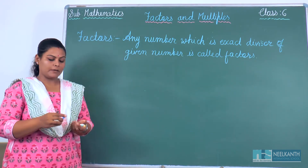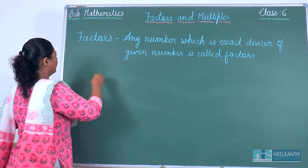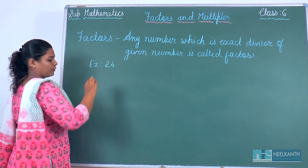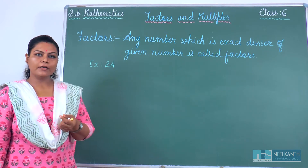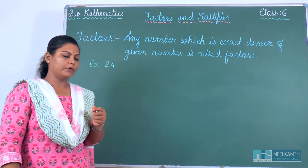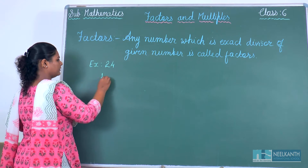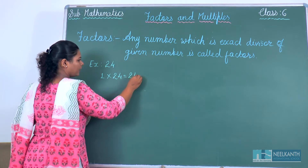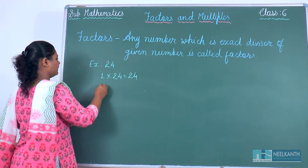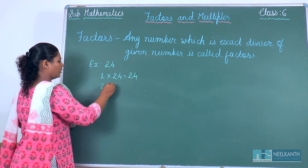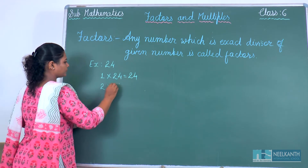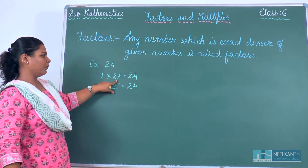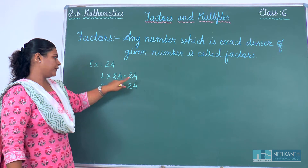Let's take one example. What are the factors of 24? First, we have to check that 1 is a factor of every number, as you all know. Now, 24 is also divisible by 2. So 1 and 24 are factors of 24.